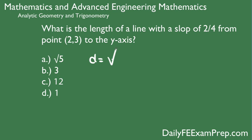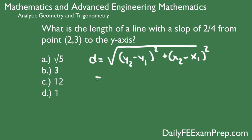So d equals the square root of (y2 minus y1) squared plus (x2 minus x1) squared. So plug in our two points. y2 is 2 minus 3 squared plus x2 minus x1, which we know is 0 minus 2 squared, all under the square root. Remember, our second point is that (0,2) point where it crosses the y-axis.